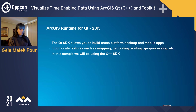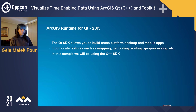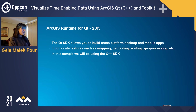There are two products we'll be using for this demo. The first is the ArcGIS Runtime for Qt SDK, which allows you to build cross-platform desktop and mobile applications with features such as mapping, geocoding, routing, and geoprocessing. The Qt SDK comes in two development environments: C++ or QML. Given the nature of this conference, I'm going to use the C++ SDK to build this sample.